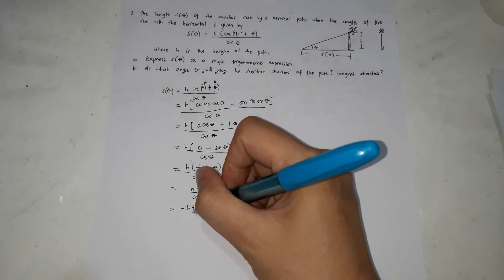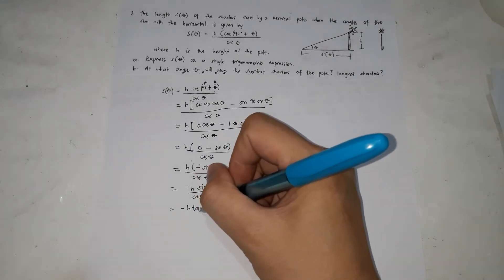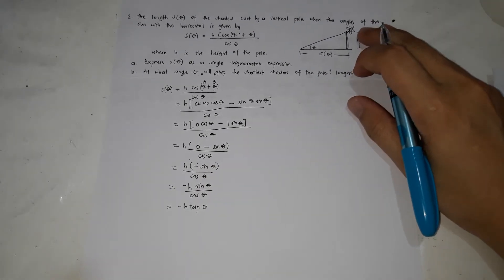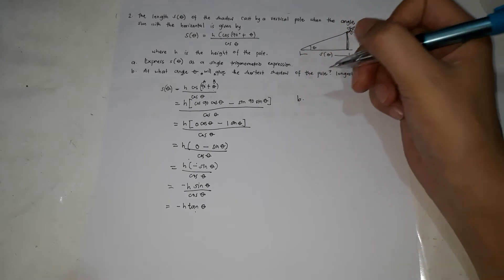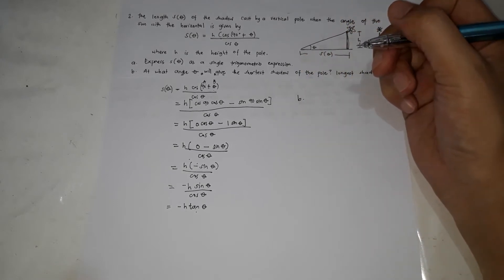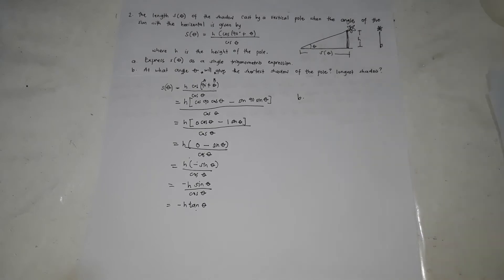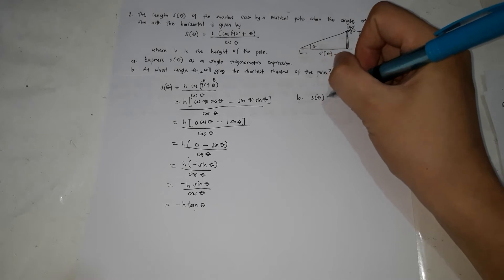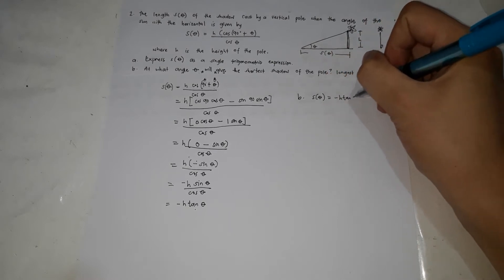This is a single trigonometric expression — tan(θ) — which is the answer for letter A. So S(θ) = −H·tan(θ). We'll proceed with letter B: at what angle θ will the shadow be shortest, and at what angle will it be longest?